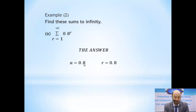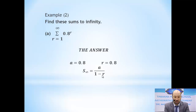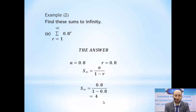You have to focus: r as an index is the variable, but r as the common ratio is the base 0.8. Now we find the sum to infinity using the formula a over (1 minus r), where a = 0.8 and r = 0.8. Type it using your calculator and you will find it equals 4.